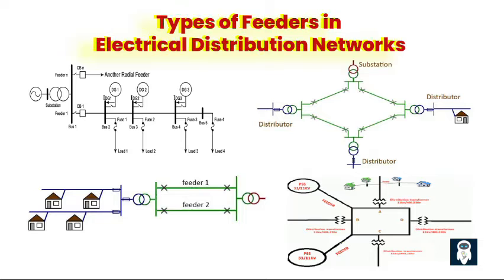Second, the ring main feeder forms a closed-loop configuration where power can flow in both directions. It provides redundancy and reliability in the distribution network. If a fault occurs in one section, power can flow through the other direction, ensuring uninterrupted supply to the connected loads. Ring main feeders are commonly used in urban areas and critical infrastructure where continuous power supply is essential.